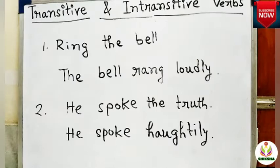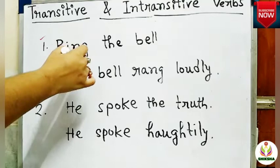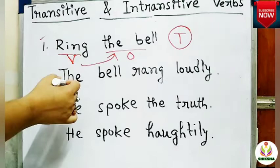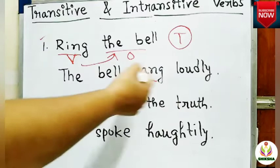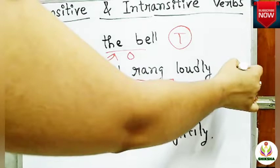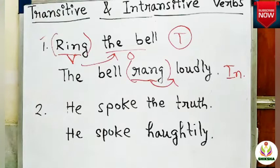Most verbs can be used both as transitive and as intransitive verbs. For example, 'Ring the bell.' Ring is the verb — ring what? Ring the bell. So bell is the object and the verb ring is used as transitive. But in 'The bell rang loudly,' if I ask the bell rang what or rang whom, there is no answer, so there is no object and rang is used here as an intransitive verb. The same verb can be used both as transitive and intransitive.